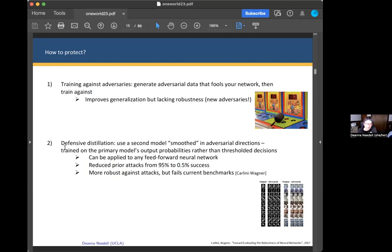The second approach is defensive distillation. The idea here is to use a second model which is smoothed in the adversarial directions. You would train on the primary model's output probabilities rather than their threshold of decisions. This can be applied to any feedforward neural network. It has been seen to reduce prior attacks from 95% to 0.5% success. So it is more robust against attacks, but a few years ago, five or six years ago now, other benchmarks were developed for which even this approach fails.